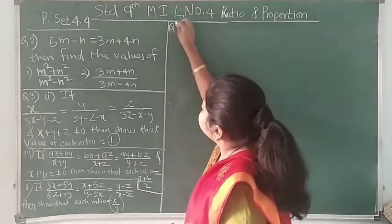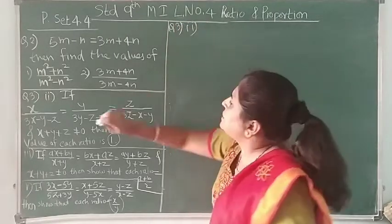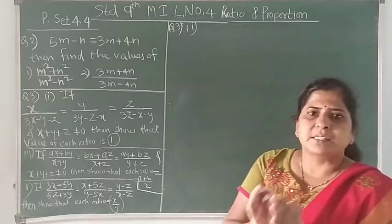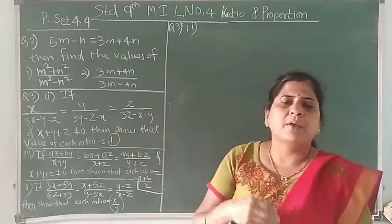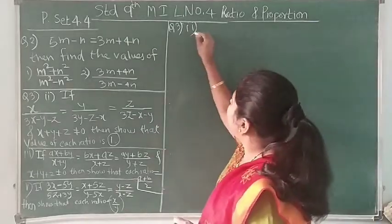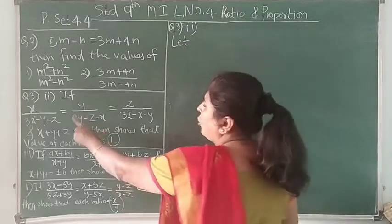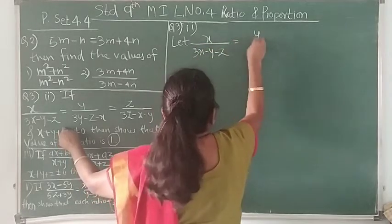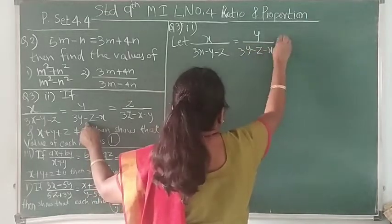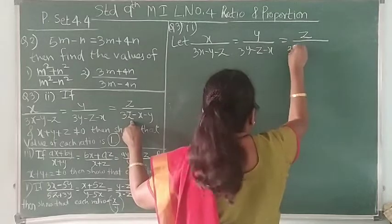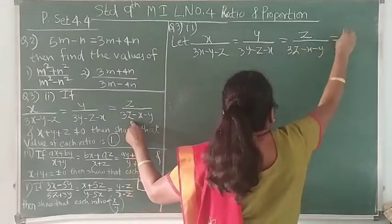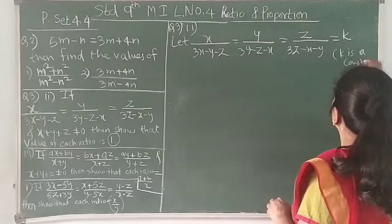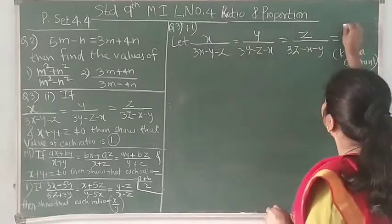Let's start with sub-question 2 from question number 3. Whatever three ratios are given to us which are equal, we write them equal to a constant k. Let x upon 3x minus y minus z equal to y upon 3y minus z minus x equal to z upon 3z minus x minus y equal to k, where k is a constant. We have assigned all three ratio values as k. When we want to show all three ratios have value 1, we need to show k equals 1.